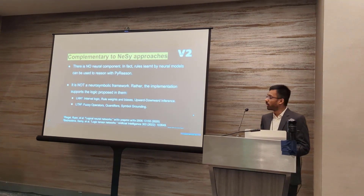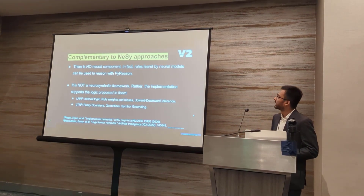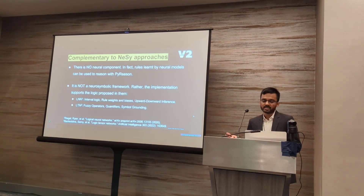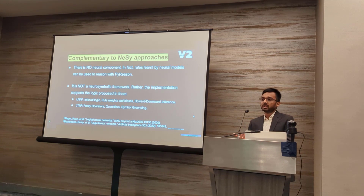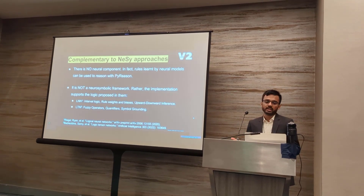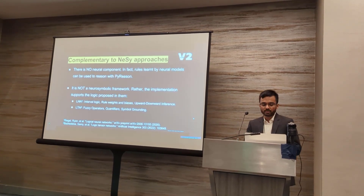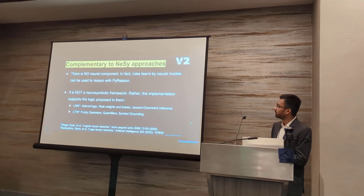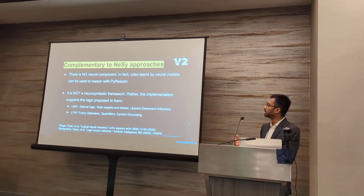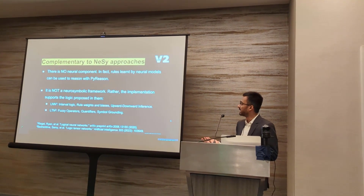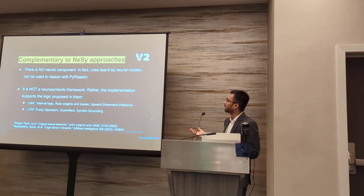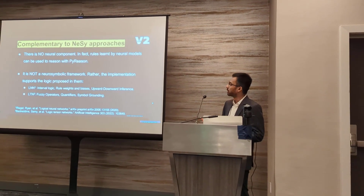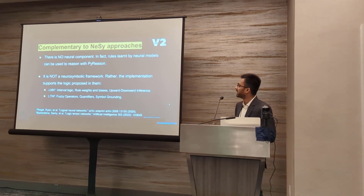PyReason works well and is complementary to neural-symbolic approaches. There is no neural component to PyReason itself — any rule you learn from a neural rule learning approach can be used to reason with PyReason. It is not a neural-symbolic framework, but it supports neural-symbolic frameworks like LNNs and LTNs. For example, LNNs and PyReason both support things like interval logic, rule weights, and biases.